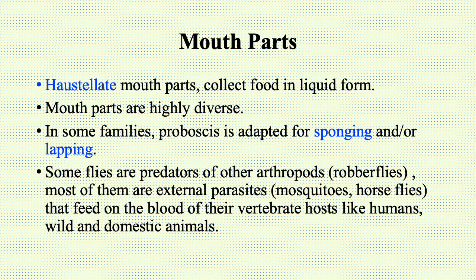Some flies are predators of other arthropods, like robber flies. Most of them are external parasites, like mosquitoes and horse flies, that feed on the blood of their vertebrate hosts such as humans and wild and domestic animals.